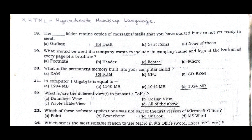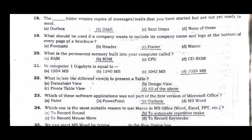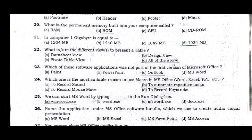Question 20: What is the permanent memory built into your computer called? Answer: Read Only Memory. Question 21: In computer, one gigabyte is equal to — answer option D, 1024 MB. Question 22: What are the different views to present a table? The correct answer is option D, all of the above — meaning datasheet view, design view, and pivot table view.